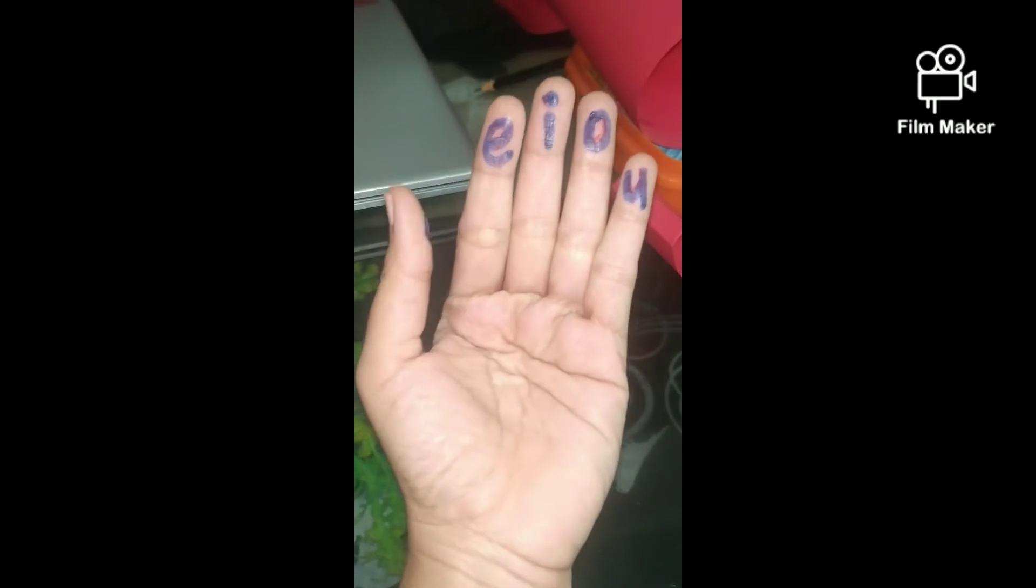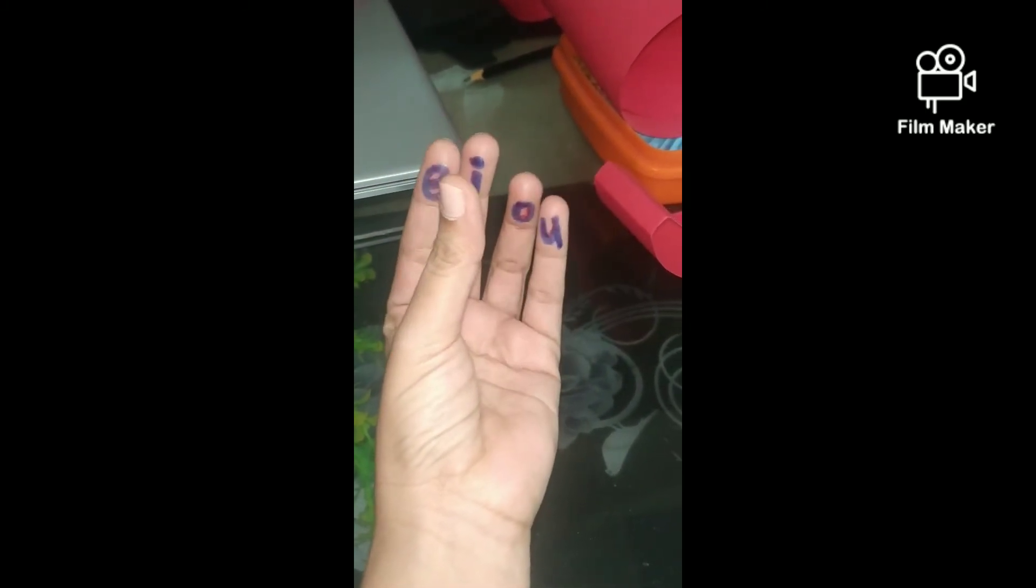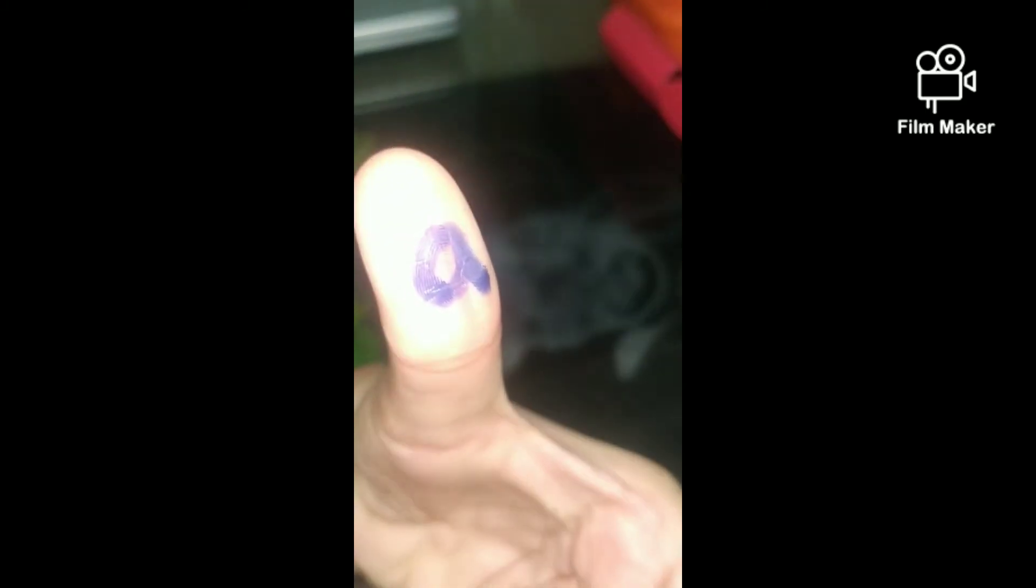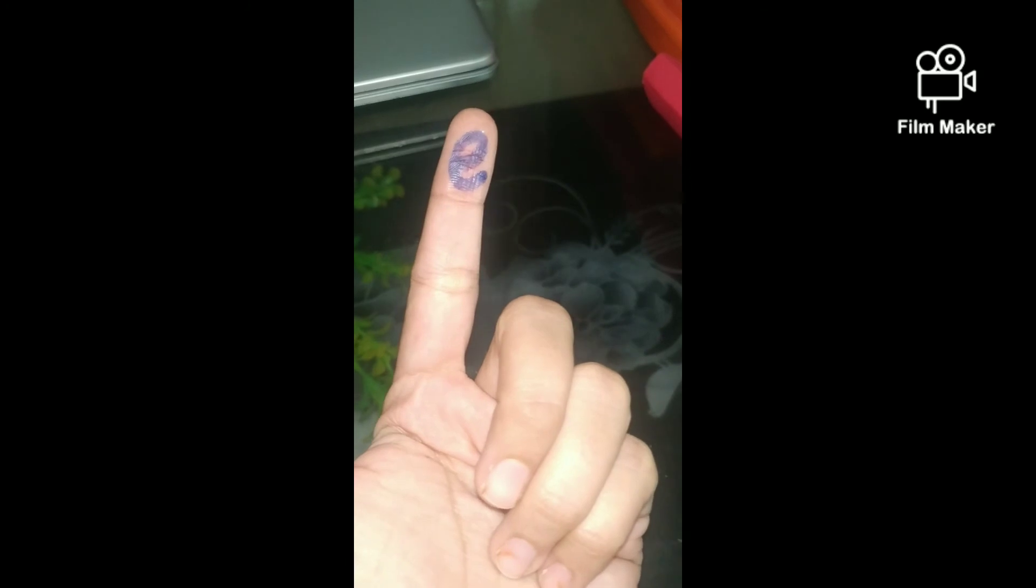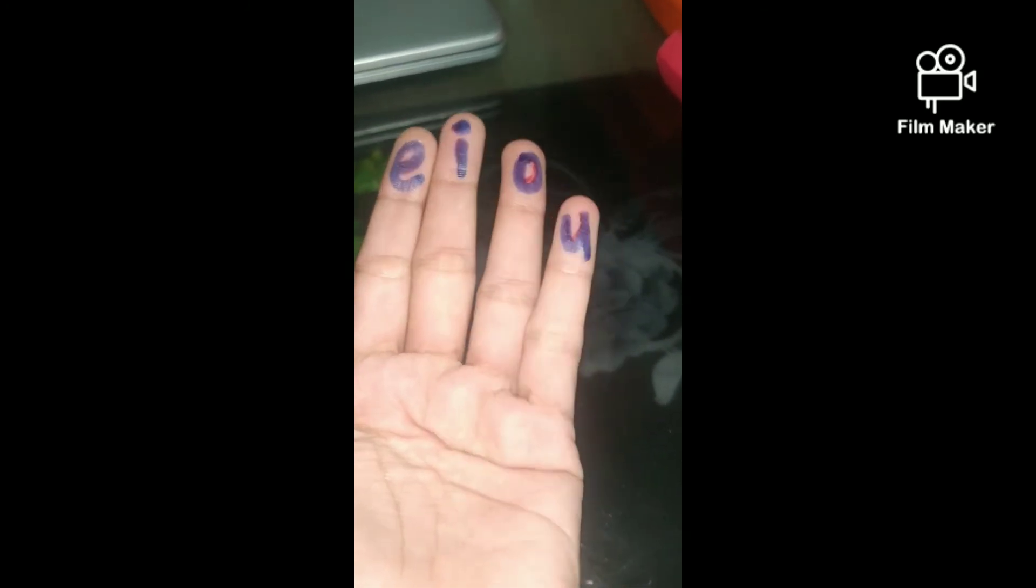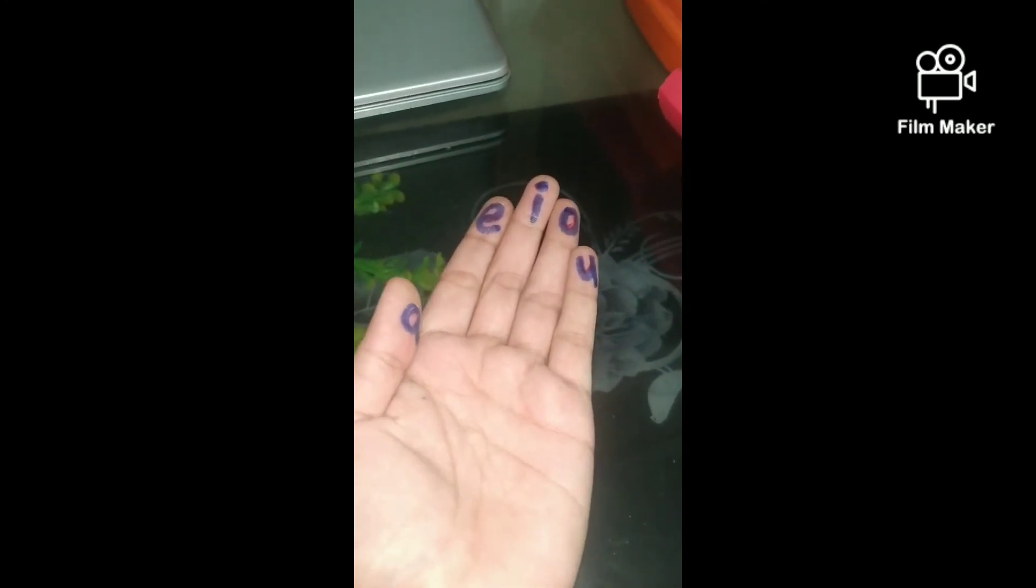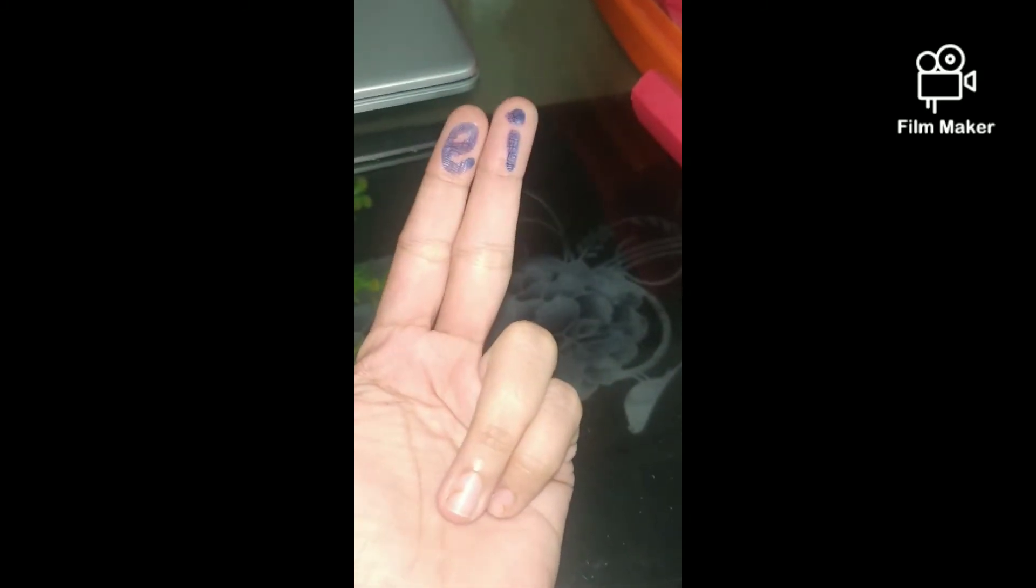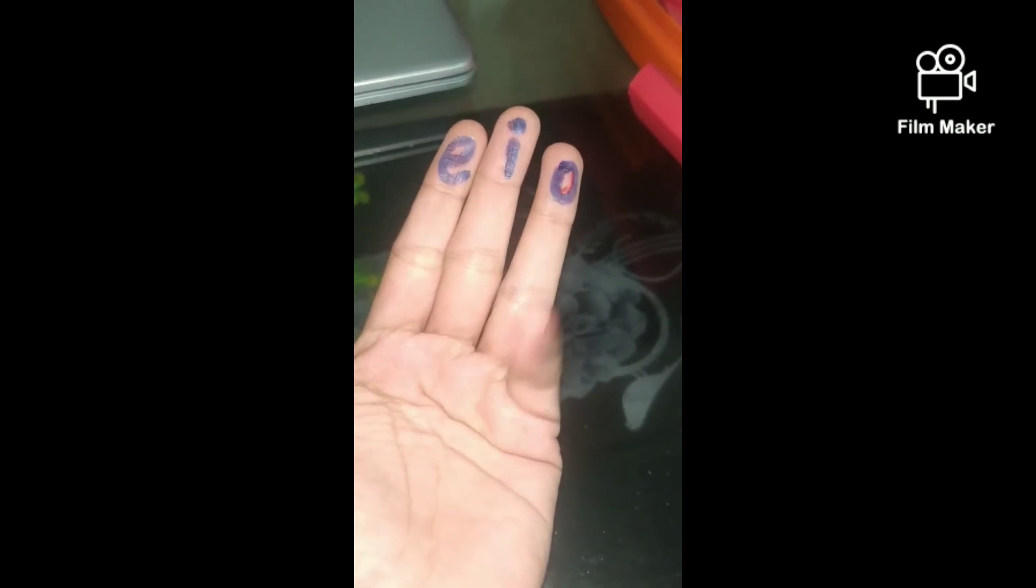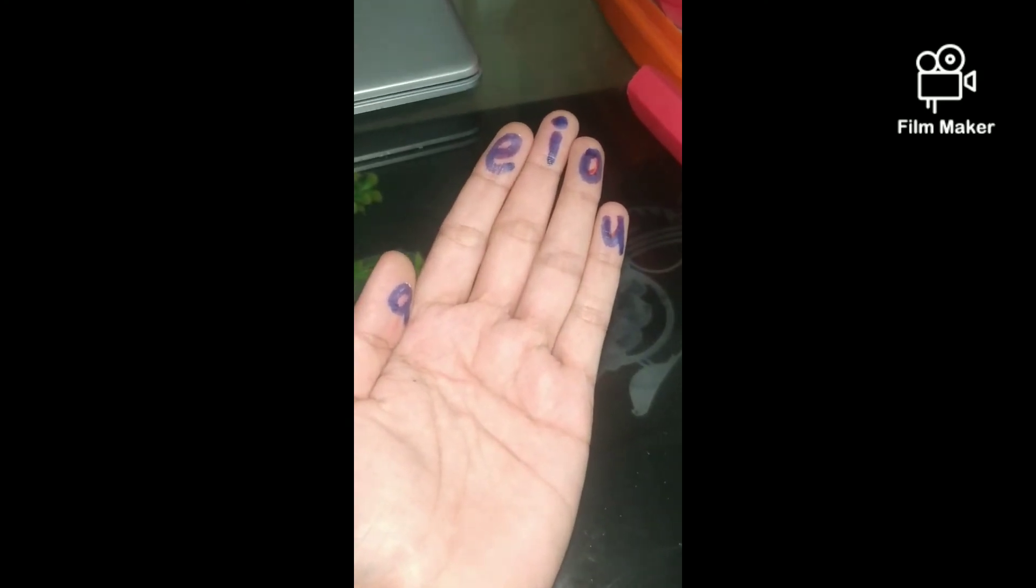Now look at my fingers, children. I have some letters on my fingers, right? Now look here. What is here? A E I O U. What are these? Vowels. A E I O U. These five letters are vowels.